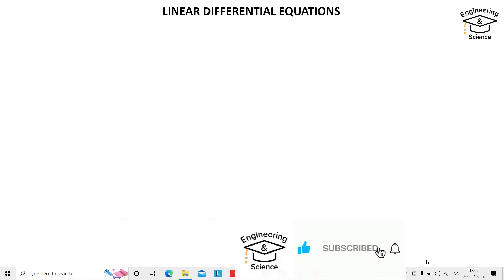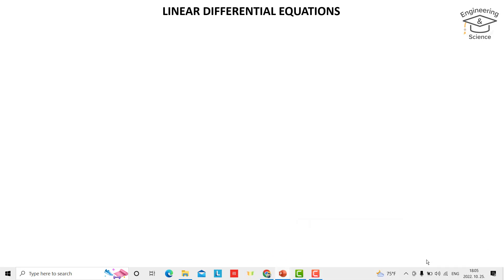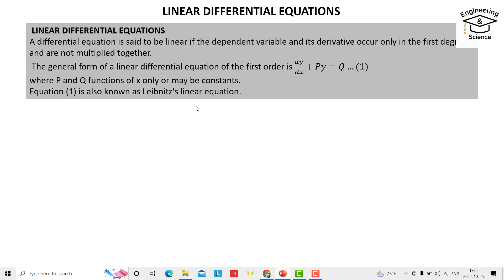Hello everyone. I want to explain what a linear differential equation is and how we can solve them. A differential equation is said to be linear if the dependent variable and its derivatives occur only in the first degree and are not multiplied together. The general form of a linear differential equation of the first order is dy/dx + Py = Q, where P and Q are functions of x only or may be constants. This equation is also known as the Leibniz linear equation.